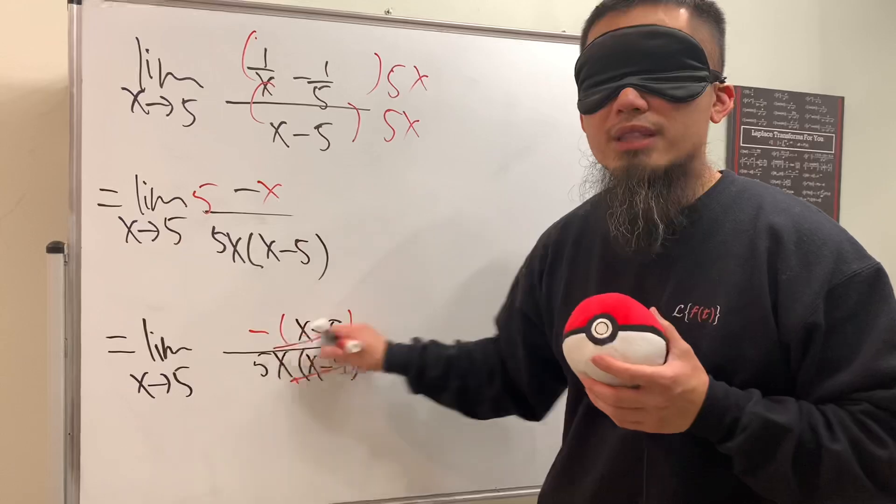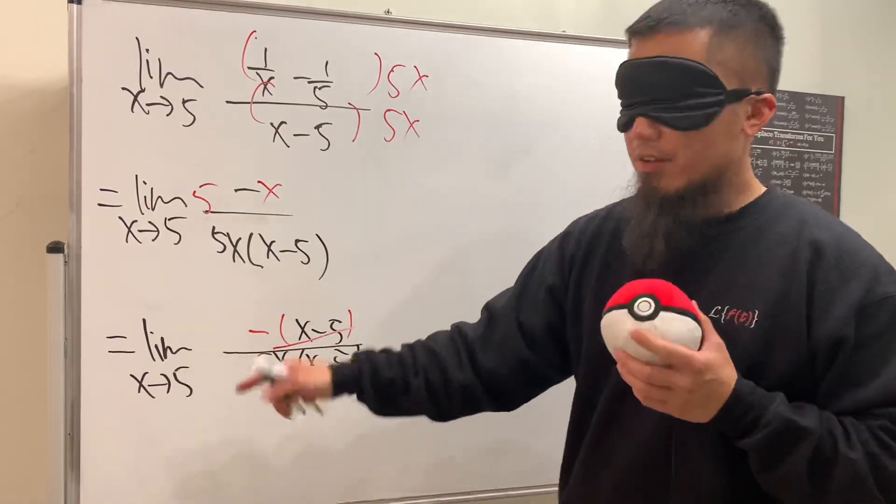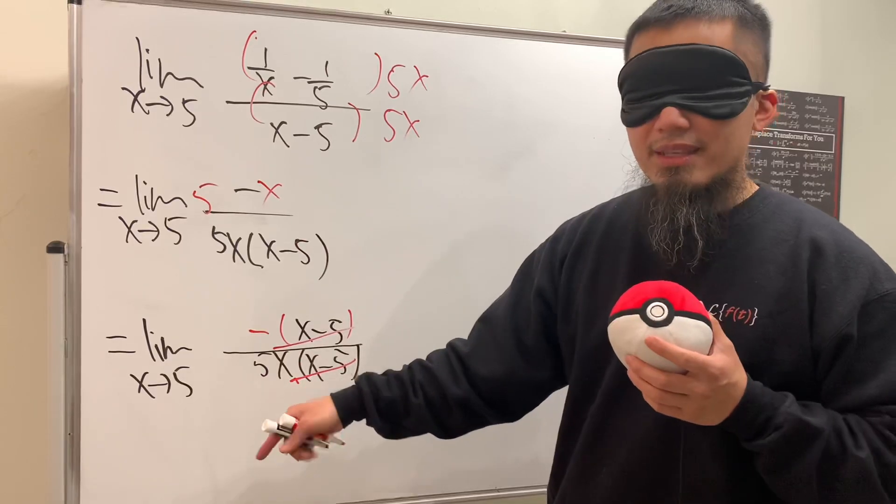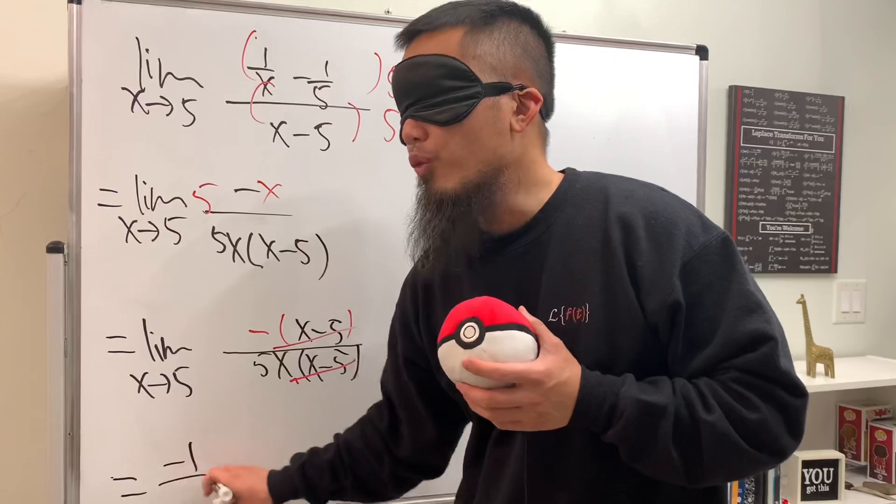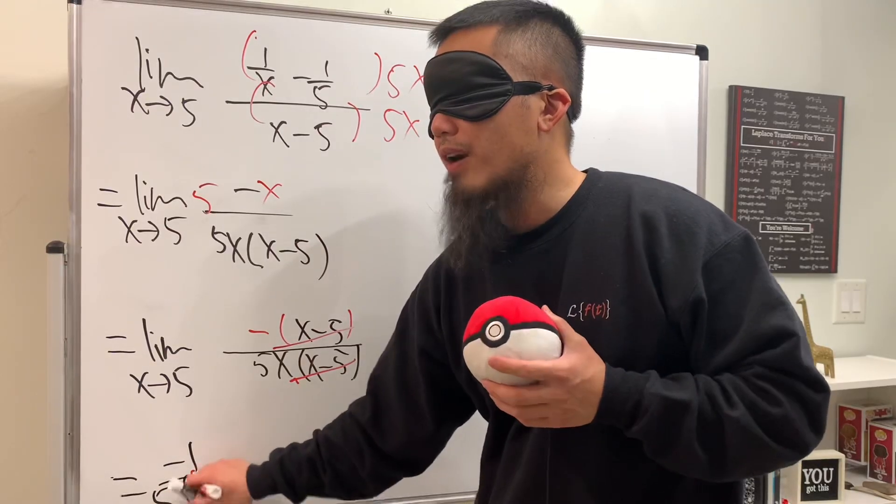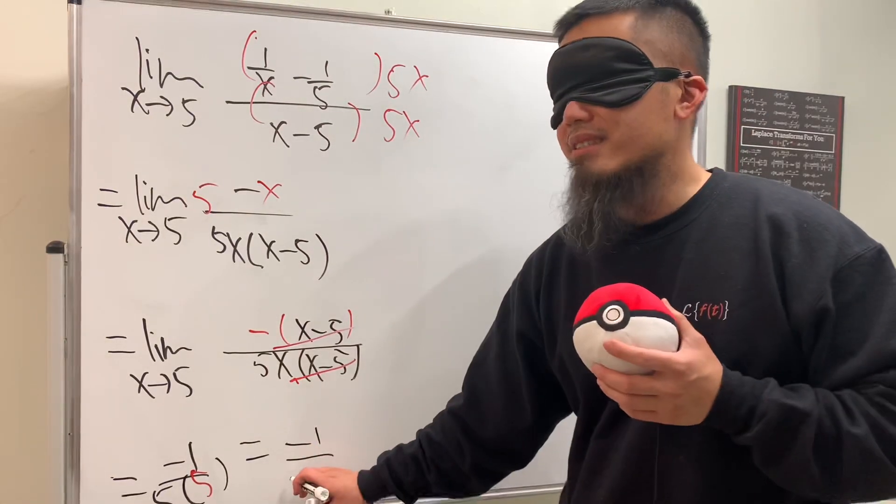Now we can cancel. Here's the best part: let's put the 5 into the x. Remember we still have negative 1 on top, so this is negative 1 over 5 times 5. Ladies and gentlemen, the answer is negative 1 over 25.